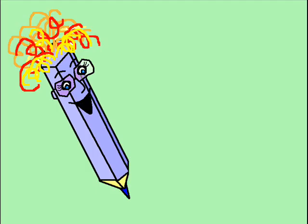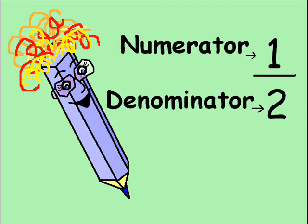To add fractions together easily, we need to make sure that they all have the same denominator. The denominator is the number on the bottom of the fraction.